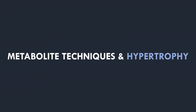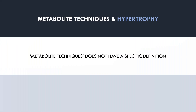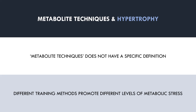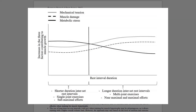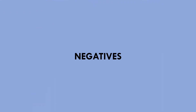How do metabolite techniques influence hypertrophy compared with traditional resistance training? First, there is no specific definition of metabolite training. Rather, some training methods promote more metabolic stress and some promote less. This systematic review proposed a hypothetical graph of what mechanisms contribute to muscle growth at different rest intervals. With longer rest periods, mechanical tension and muscle damage are greater while metabolic stress is lower but still present. As rest intervals shorten, there is a greater proportion of metabolic stress while mechanical tension and muscle damage are reduced. So rather than thinking about metabolite techniques as a standalone training method, it is more accurate to think of this on a spectrum.